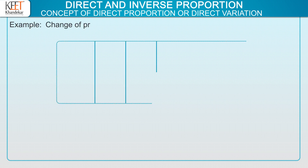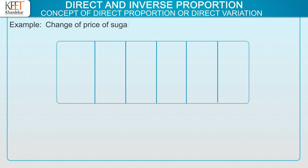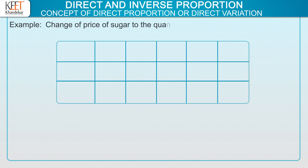Note how the price of sugar changes with the quantity. Let quantity be represented by Q, and let price be represented by P. Let the price of 1 kg sugar be Rs. 20.